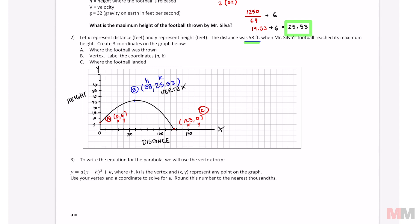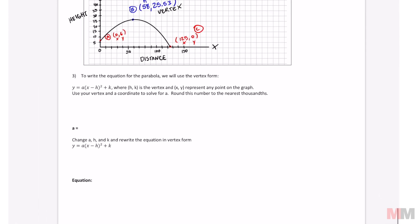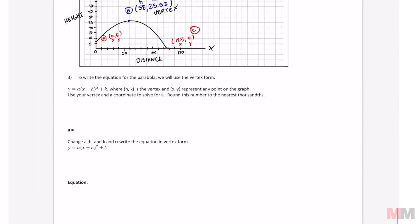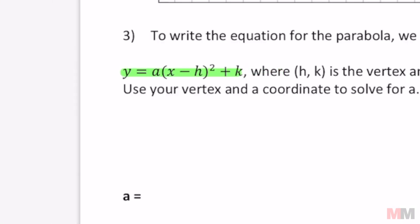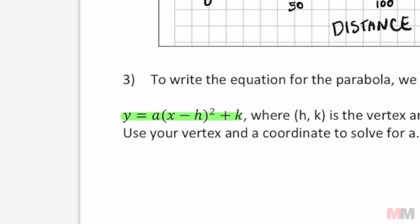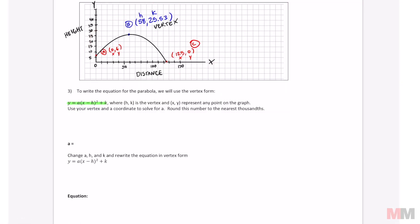Moving on to the fun stuff, your favorite: doing the math and writing the equation. To write the equation for the parabola, we will use this vertex form. It looks crazy, it's got a lot of letters in it. But check it out, most of those letters come from the graph that we just made right here. The only letter, if you observe, that we do not have is A. And we're gonna find A on question number three to help us write our equation.